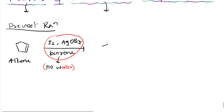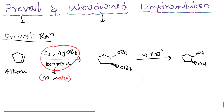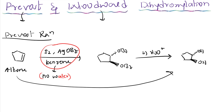So I will get this kind of product. Here, OBz comes below the plane and one more OBz comes above the plane. In the second step, we add water for hydrolysis. Then I will get the final product. It is nothing but dihydroxylation — the alkene is converted to a diol because two OH groups are present: one OH is above and one OH is below.